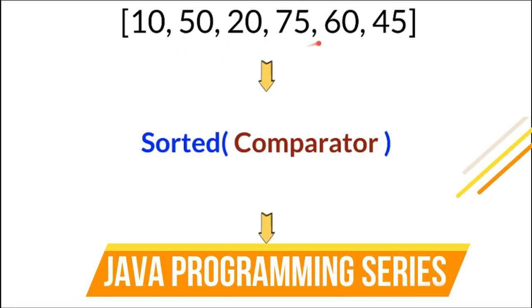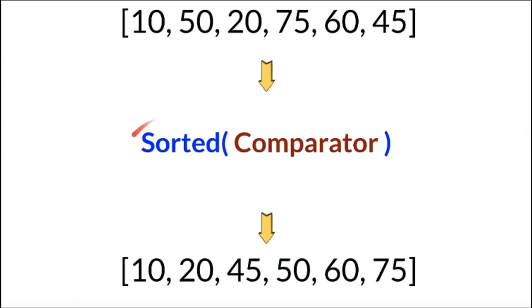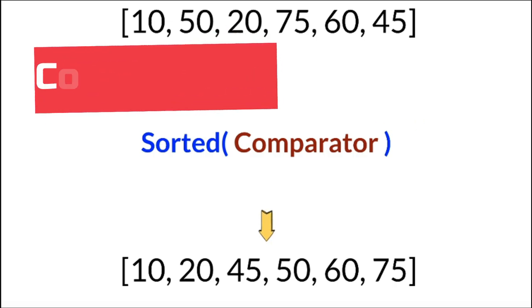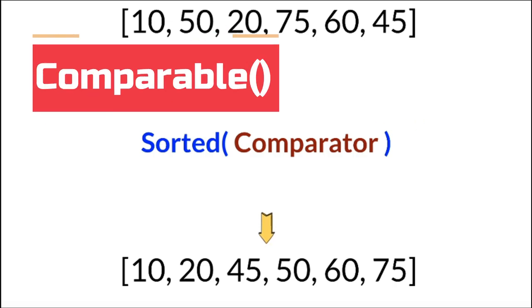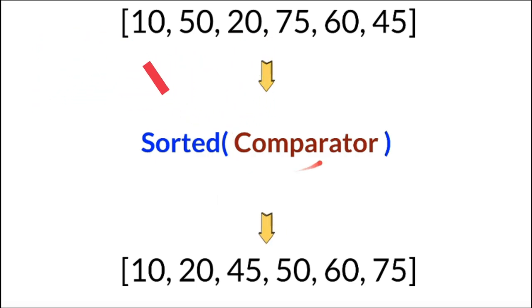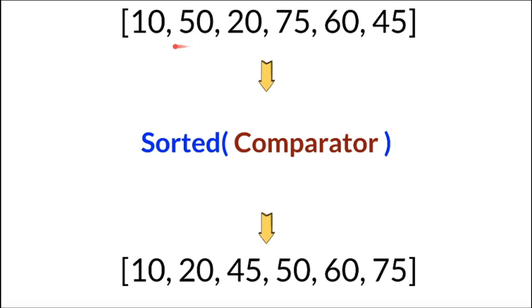In this video I'm going to write a simple Java program to sort an array of elements using the Streams sorted API. The objects inside the arrays should implement the Comparable interface; otherwise, we can also pass a Comparator implementation in the sorted method.